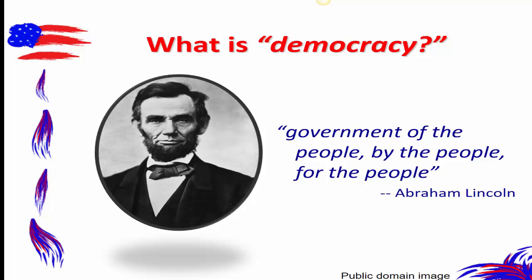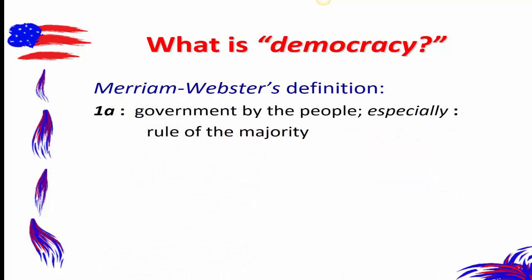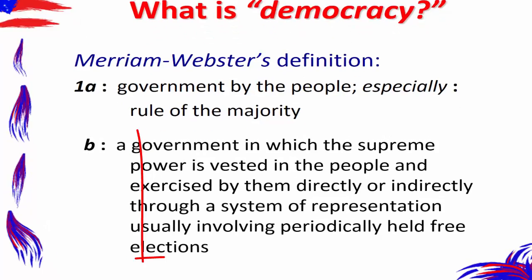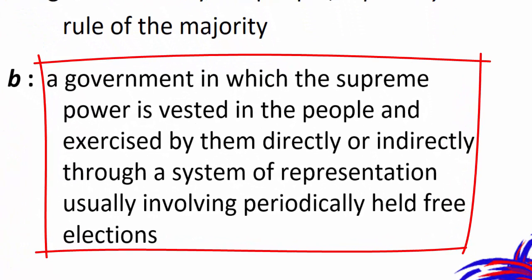This is a soundbite most of us are familiar with, but we don't always necessarily reflect on it. Government of the people means people essentially comprise the government. Government by the people means the people themselves have constructed, created, and implement the government. For the people means the government needs to serve the people's interests. In our contemporary context, this tends to mean Merriam-Webster's second definition: a government in which supreme power is vested in the people and exercised by them directly or indirectly through a system of representation, usually involving periodically held free elections.